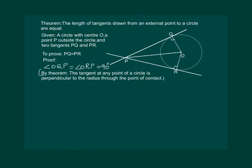Now can we prove triangle OQP and triangle ORP congruent? Clearly OQ equal to OR. Why? Because it is the radius. Also OP is equal to OP is common.